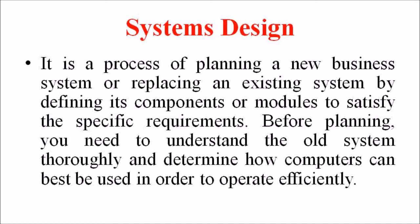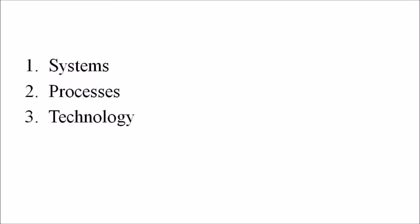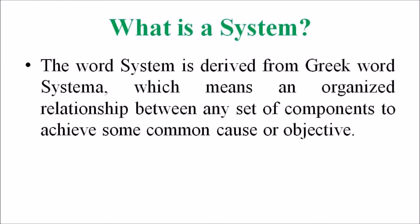System design focuses on how to accomplish the objective of the system. System analysis and design mainly focuses on three terms: system, process and technology. So there arises a question — what is a system? The word system is derived from the Greek word 'systema', which means an organized relationship between any set of components to achieve some common cause or objective. A system is an orderly grouping of independent components linked together according to a plan to achieve a specific goal.